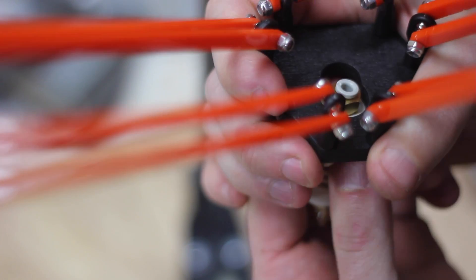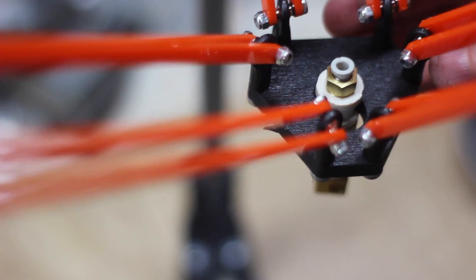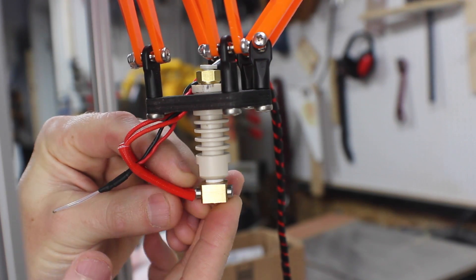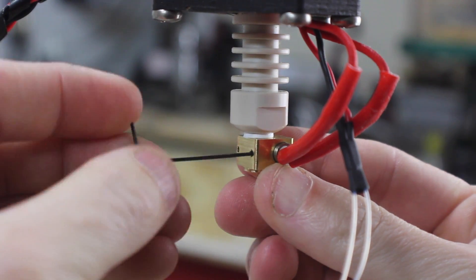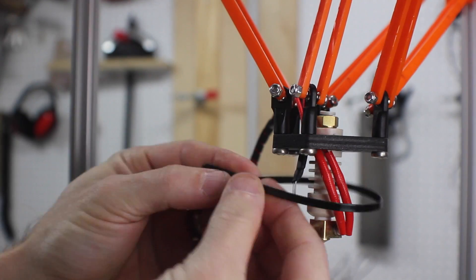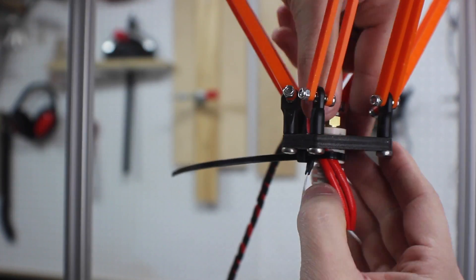To attach the hot end, you push it up through the platform and then slide it to the center. That locks it in. Feed your thermistor and heater cables in from the top. You mount the heater with a small allen wrench. The thermistor just pushes into the hole, but make sure that you get it all the way in. Then use a zip tie to hold these in place.